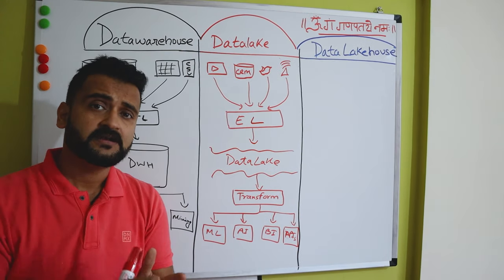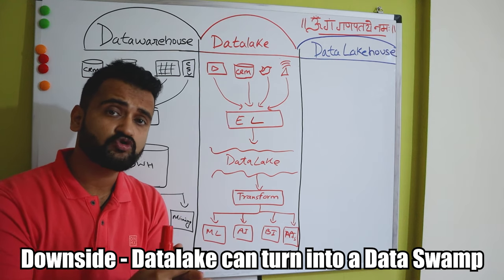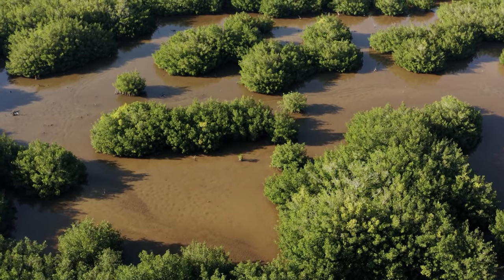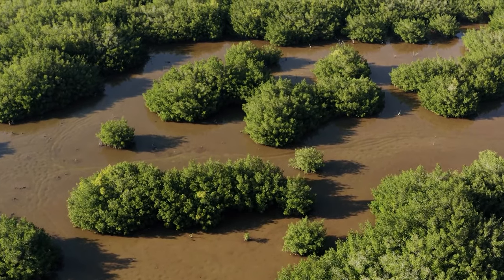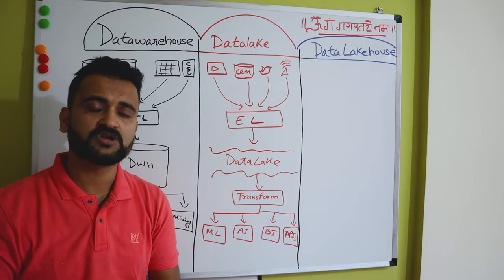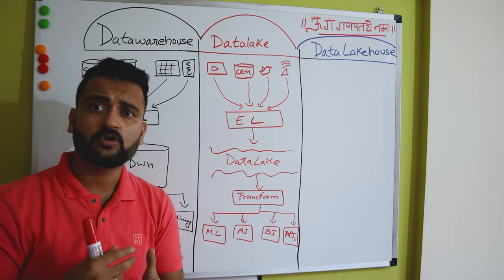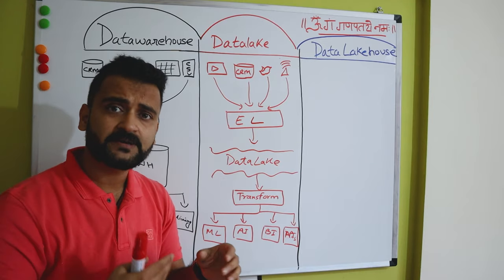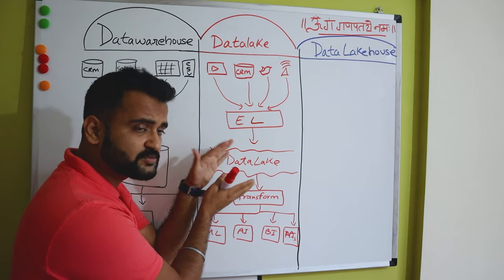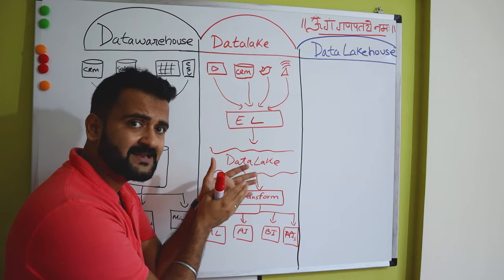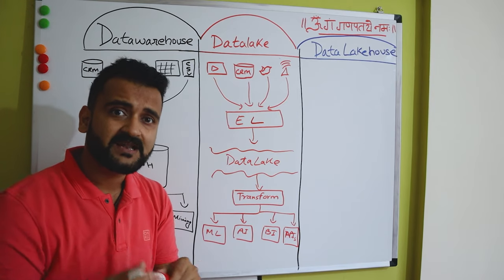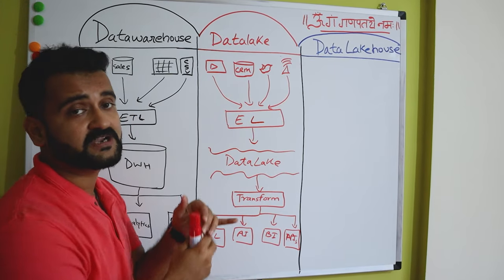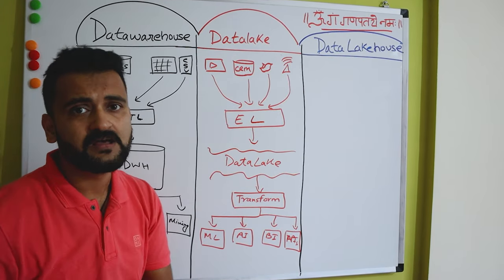But it's a fairly new concept, and the downside is that a data lake could turn into a data swamp. A data swamp is a concept where you have so much data that you don't even know what exactly you need to do with it. There could be data duplication issues, data of very low quality, and you're not able to make out why you got this data in the first place. Data governance is also a very important consideration with data lake, because you need to get a hold of what kind of data you are getting.